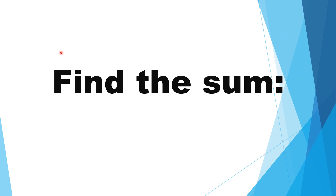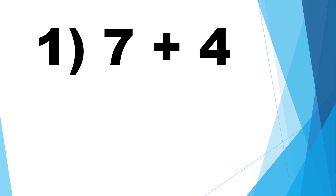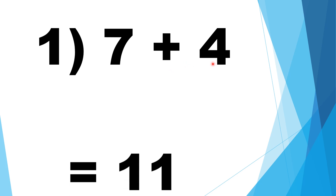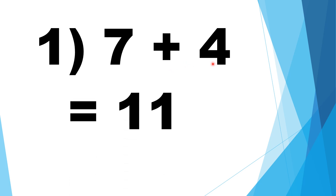Find the sum. Let us look at the signs first — if it is like signs or unlike signs — before doing the operation. Number 1: positive 7 plus positive 4. Positive and positive are like signs. Add and copy the common sign: positive 7 plus positive 4 is equal to positive 11.